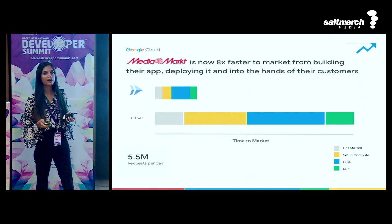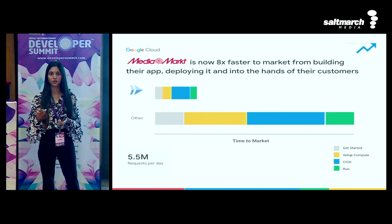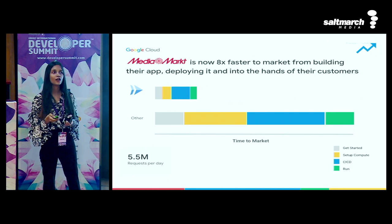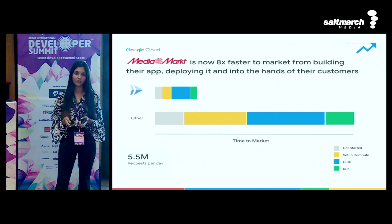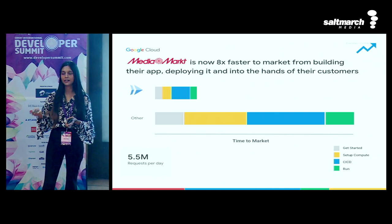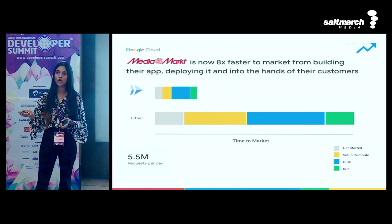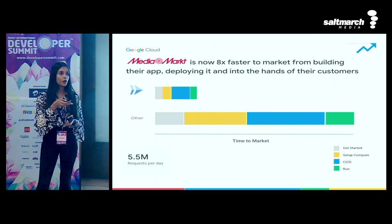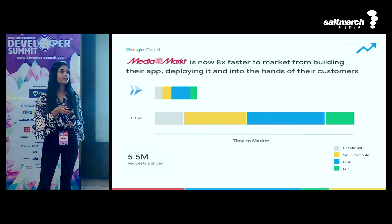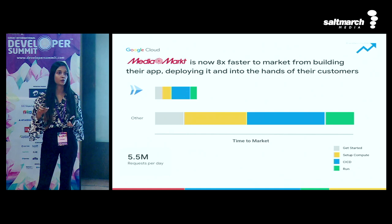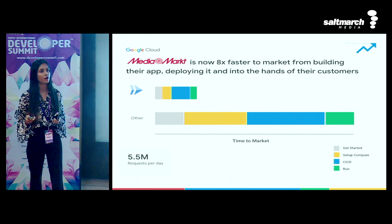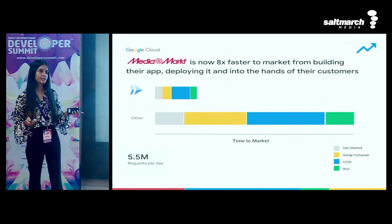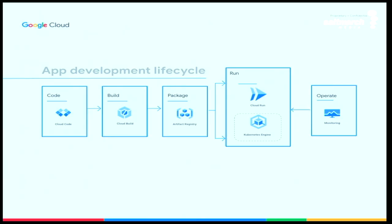Another example is Khan Academy. During COVID, online education became a big thing. Khan Academy used Cloud Run to deploy their newer videos and serve the huge traffic surge during COVID when everything was online. Khan Academy was an early adopter of Cloud Run and could see the success with it.